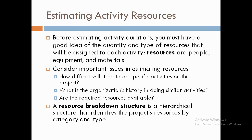The fourth process is estimating activity resources — that is, the quantities and types of resources required for completing the project. Key questions include: are the resources for activity completion available, what is the difficulty of certain activities, and what is the organization's history in doing similar activities? A resource breakdown structure is used to provide the category and types of project resources.